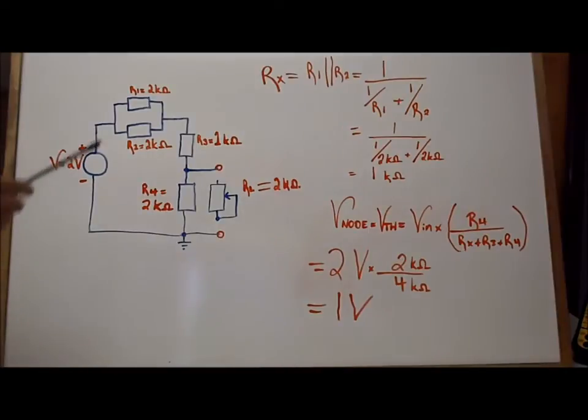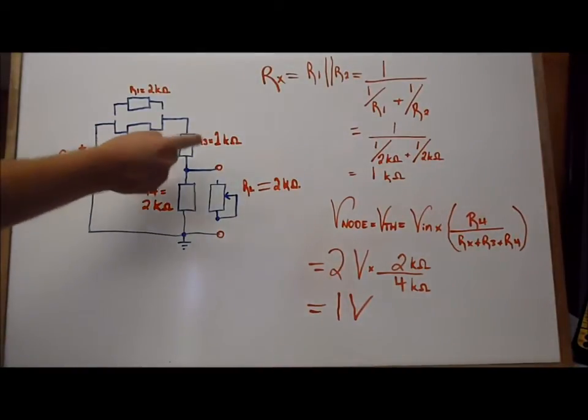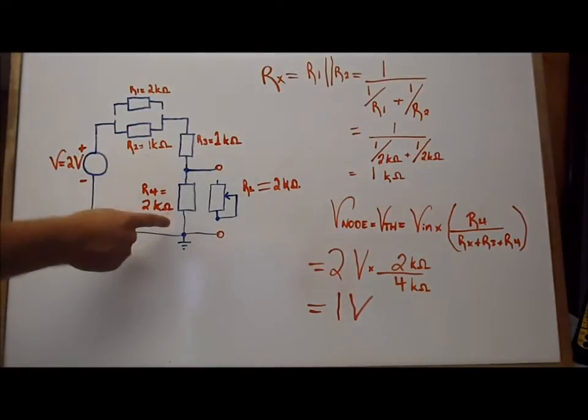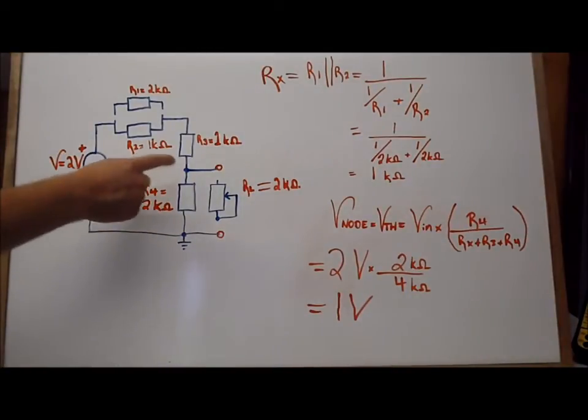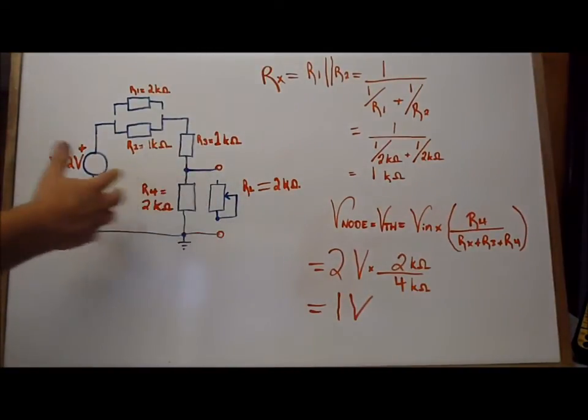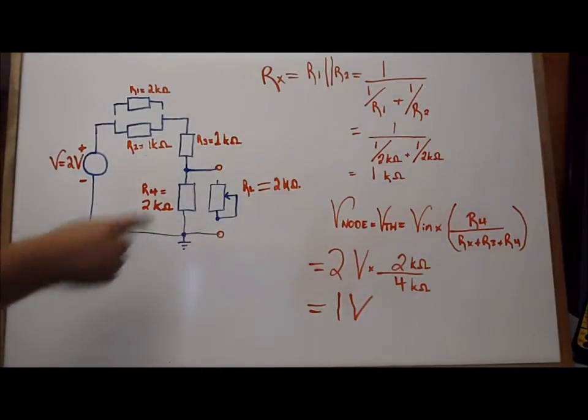So from there we can simplify the circuit by saying that this is now equal to one kilo ohm. And now when we take one kilo ohm plus one kilo ohm in series with two kilo ohms, because you've got to remember that the RL has actually been removed from the circuit, so you can actually just analyze it at a certain point.